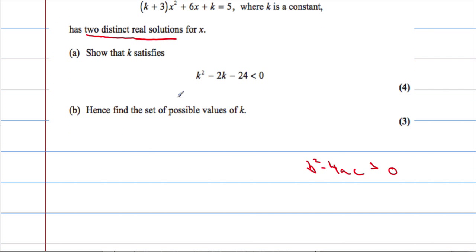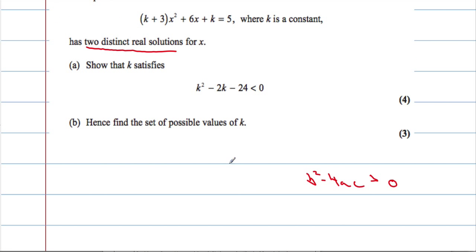So the first part, we need to show that k satisfies this. So what we're going to do is rewrite the equation equal to 0. So we get (k + 3)x² + 6x + (k - 5) = 0.